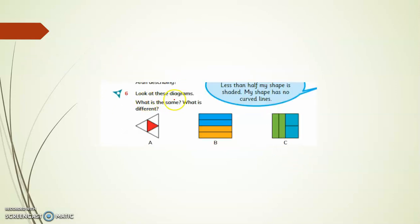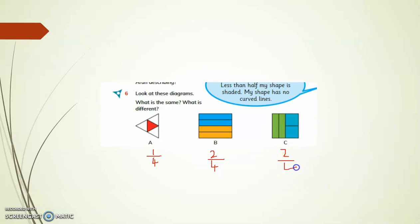So let us look at this diagram — what is the same, what is different. Let us look at the fraction that this represents. This represents the fraction one by four. Here, the green represents two by four. So what is the same about all these pictures? They are all divided into four equal parts.